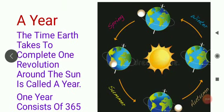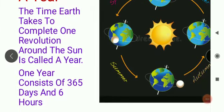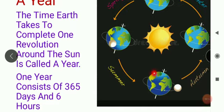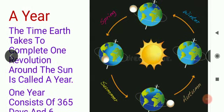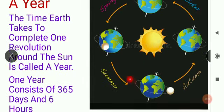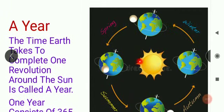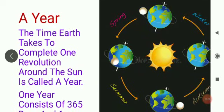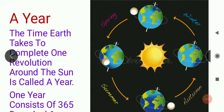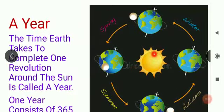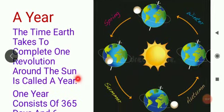Now, what is a year? The time earth takes to complete one revolution around the sun is called a year. Remember what revolution of earth is — when earth moves around the sun, it is called a revolution. So the time earth takes to complete one revolution around the sun is said to be a year.